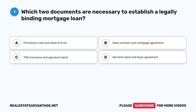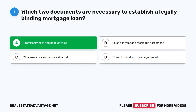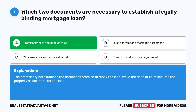Question 1. Which two documents are necessary to establish a legally binding mortgage loan? A. Promissory Note and Deed of Trust. B. Sales Contract and Mortgage Agreement. C. Title Insurance and Appraisal Report. D. Warranty Deed and Lease Agreement. The correct answer is A. Promissory Note and Deed of Trust. The promissory note outlines the borrower's promise to repay the loan, while the deed of trust secures the property as collateral for the loan.